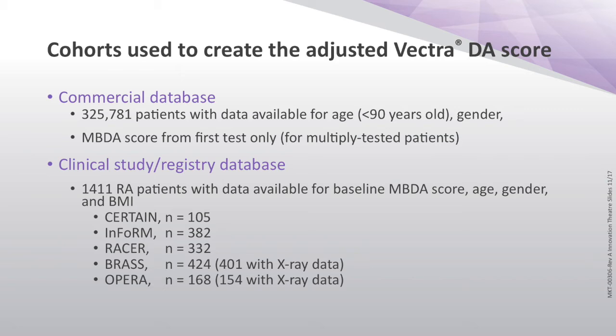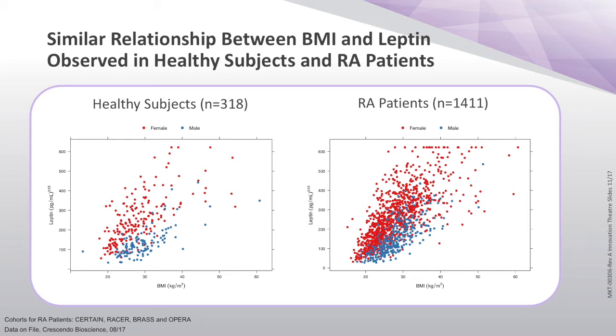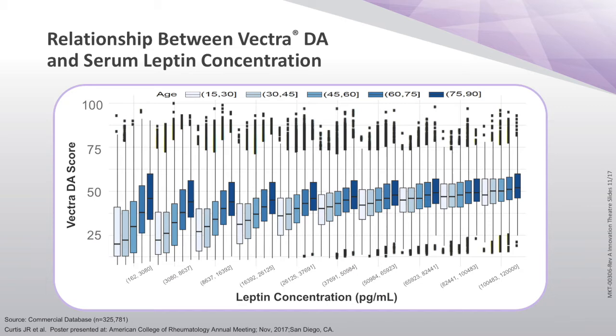We have two large data sets from which to build this. Looking at a cohort of healthy subjects, you see the relationship between BMI and leptin. And now looking at a population of 1,400 rheumatoid patients, it's the same relationship. People at the extremes of body mass index tend to have high leptins, and people at the other end have low. With leptin levels divided into 20 epochs, you can see that over the extremes of body mass index, leptin may rise by as many as 15 or more vector points. Keep that in mind.